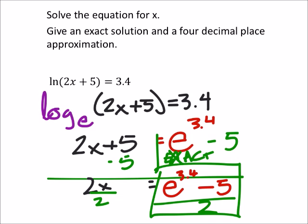But again, we want the four decimal place approximation. So I'm just plugging this into my calculator. And when I do that, I got 12.4821.